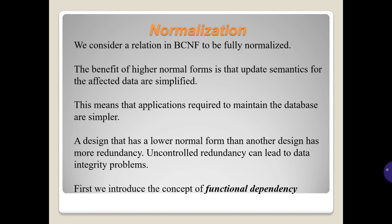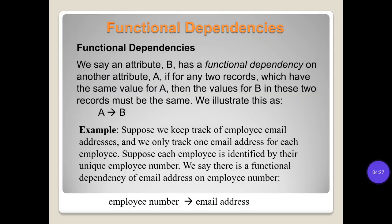A design with a lower normal form has more redundancy, and uncontrollable redundancy can lead to data integrity problems. We introduce the concept of functional dependency. We say an attribute B has a functional dependency on another attribute A if, for any two records which have the same value for A, the values for B in these two records must be the same. We illustrate this as A → B. For example, suppose we keep track of employee email addresses, tracking only one email per employee, and each employee is identified by a unique employee number. We say there is a functional dependency: employee number → email address.